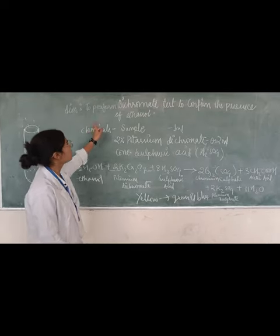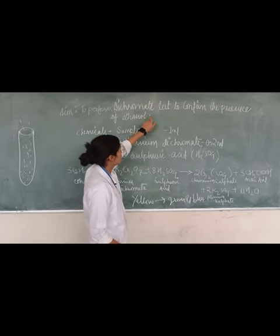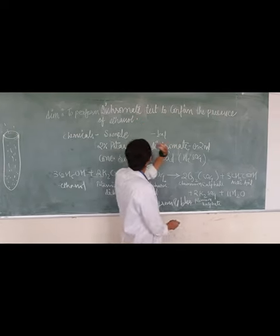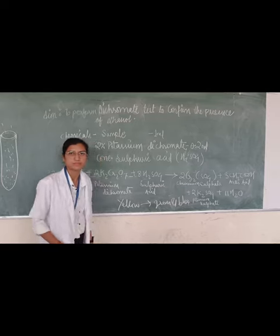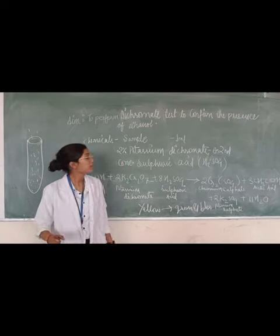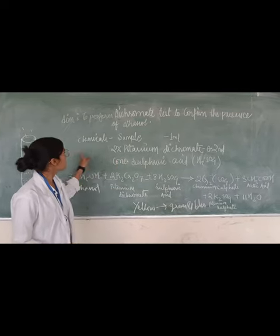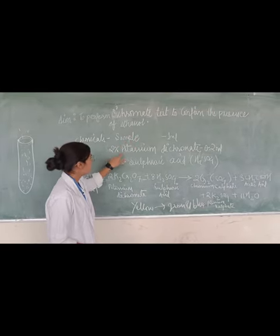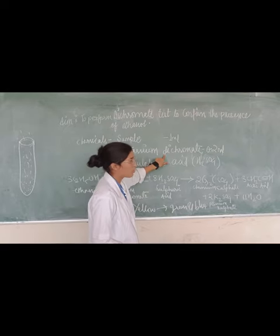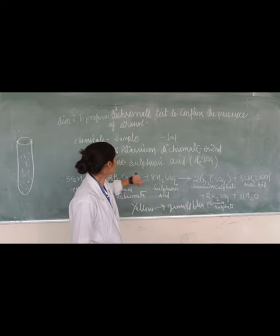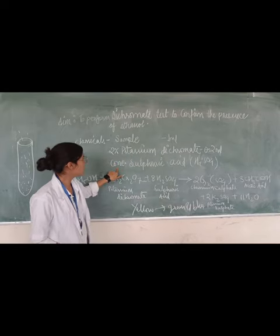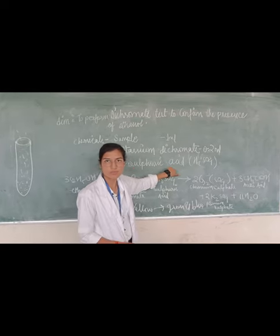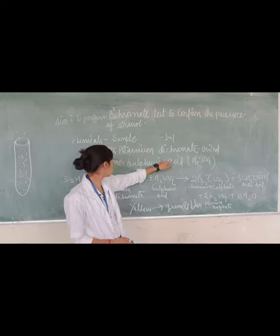Today we are going to perform dichromate acid to control the presence of ethanol. The chemicals we use in our test sample: 1ml ethanol, potassium dichromate 2ml, and concentrated sulfuric acid H₂SO₄.